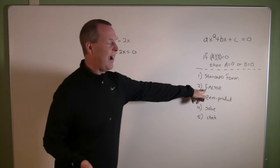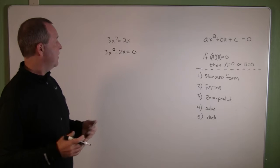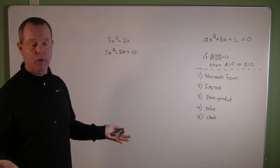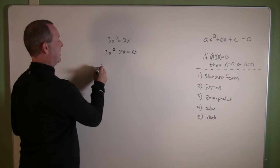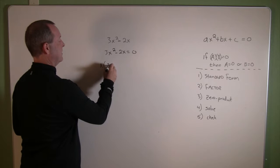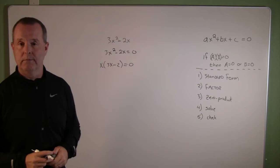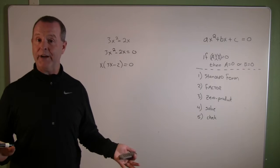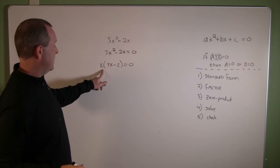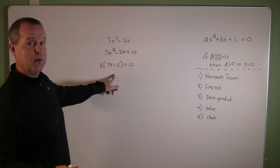Next step, let's factor. Well, first of all, it looks like I can factor something from both terms. I can factor out an x, and I'm left with 3x minus 2 equals zero. Now do you notice I have two factors here? One factor is this x, the other factor is 3x minus 2.